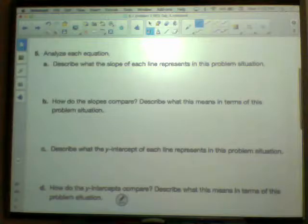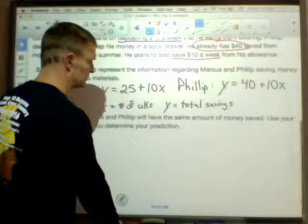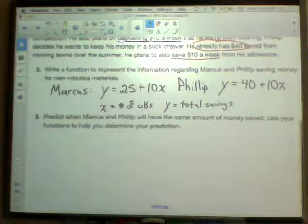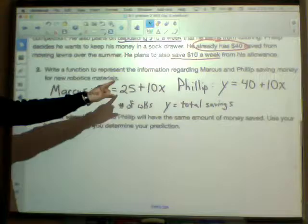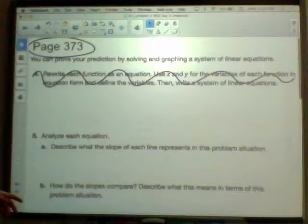All right, now hopefully you're at the bottom of page 373. Let's talk about some of your responses. I'm not gonna write everything out - I think you've done your writing, hopefully you can check and see what you've got written. Number three said predict when Marcus and Philip will have the same amount of money saved. I'm hoping that you guys see that if Marcus and Philip start out with different amounts and then they save the exact amount each week, they are never gonna be the same. I'm hoping that you said that somewhere - they're never gonna be the same.